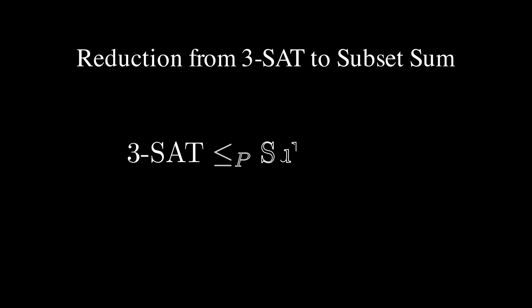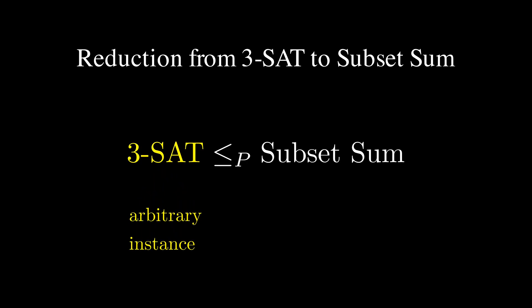The subset sum problem is clearly in NP, because when given a subset of integers, we can easily verify whether the sum equals k in polynomial time. Hence, to prove that the subset sum problem is NP-complete, we can reduce from the 3SAT problem to the subset sum problem. We take an arbitrary instance of 3SAT and use it to construct a specific instance of the subset sum problem. Then we show that the answer to the 3SAT instance is yes if and only if the answer to the subset sum instance is yes.